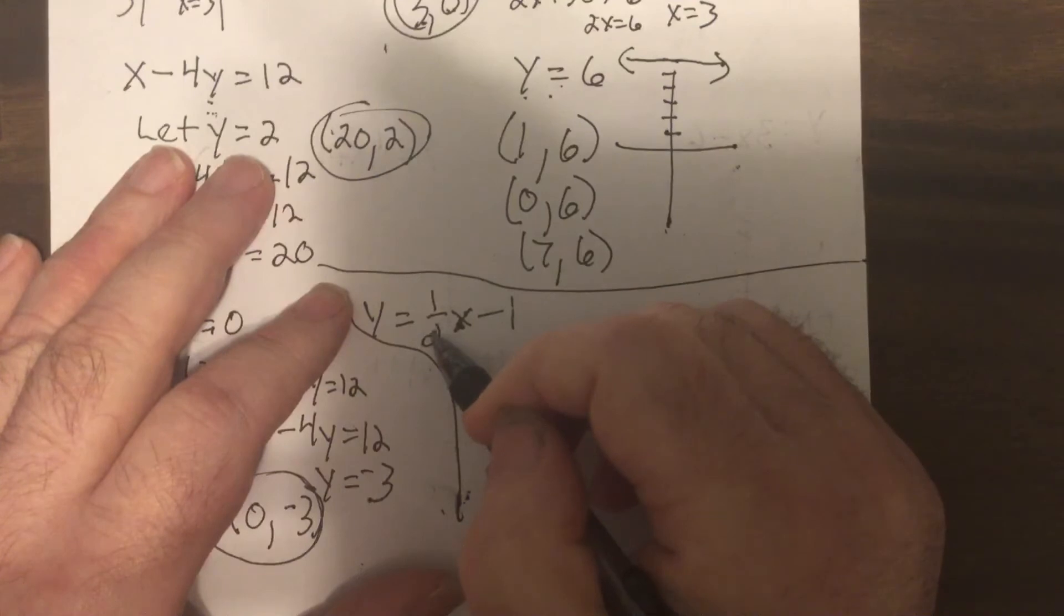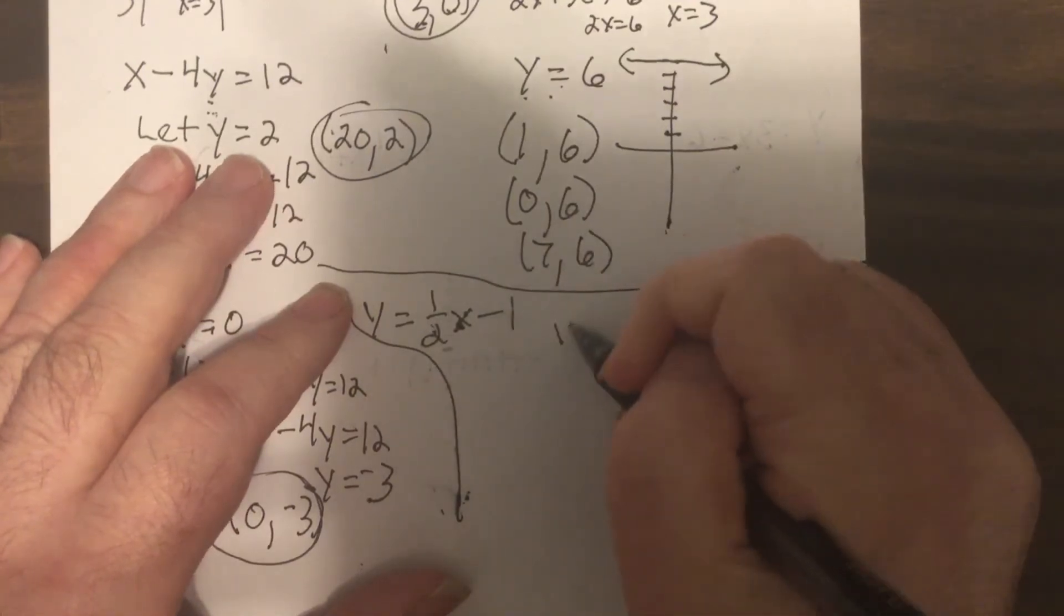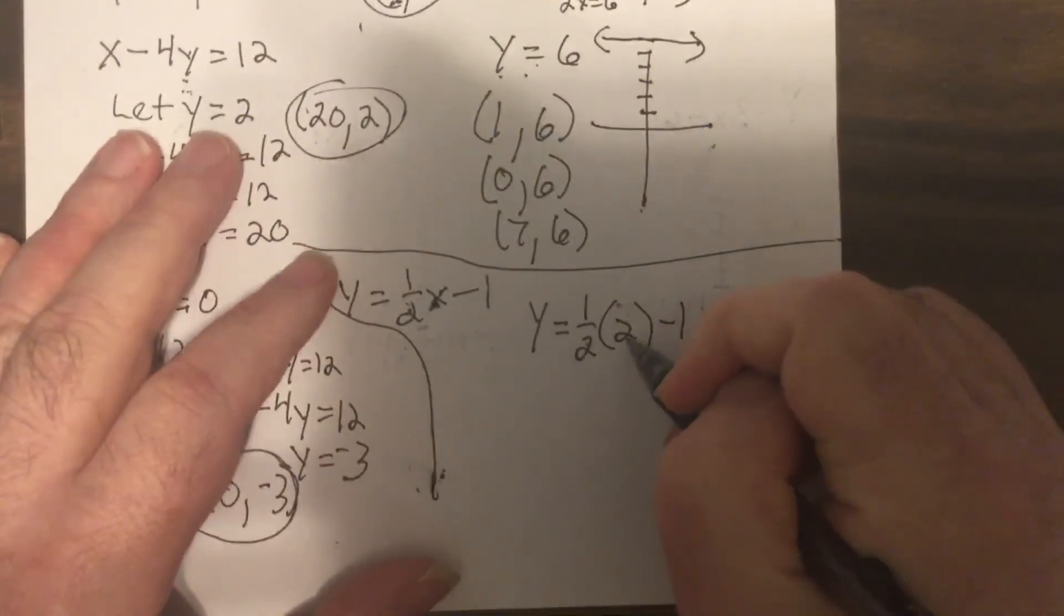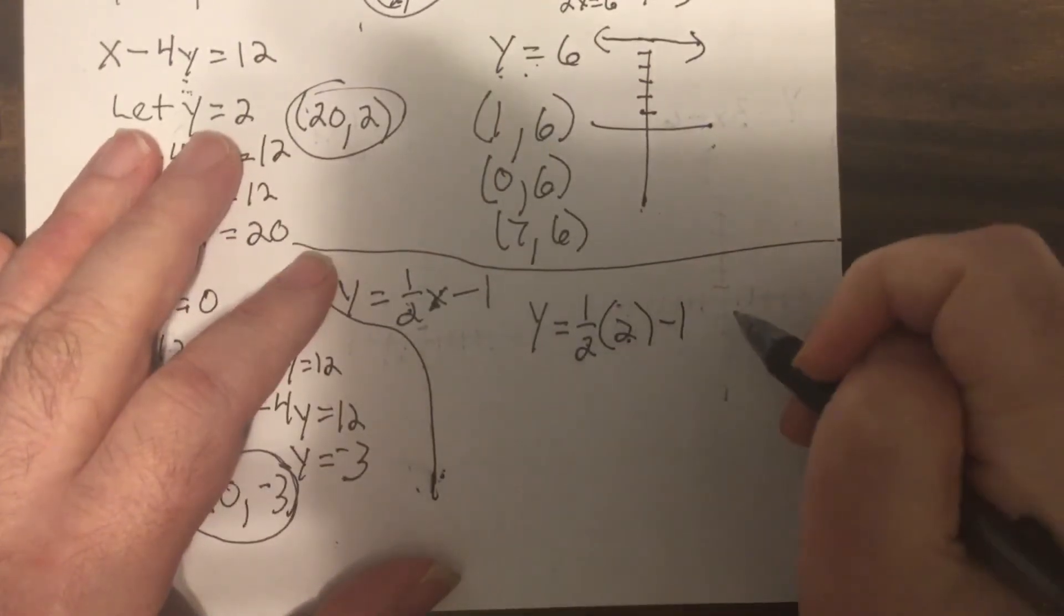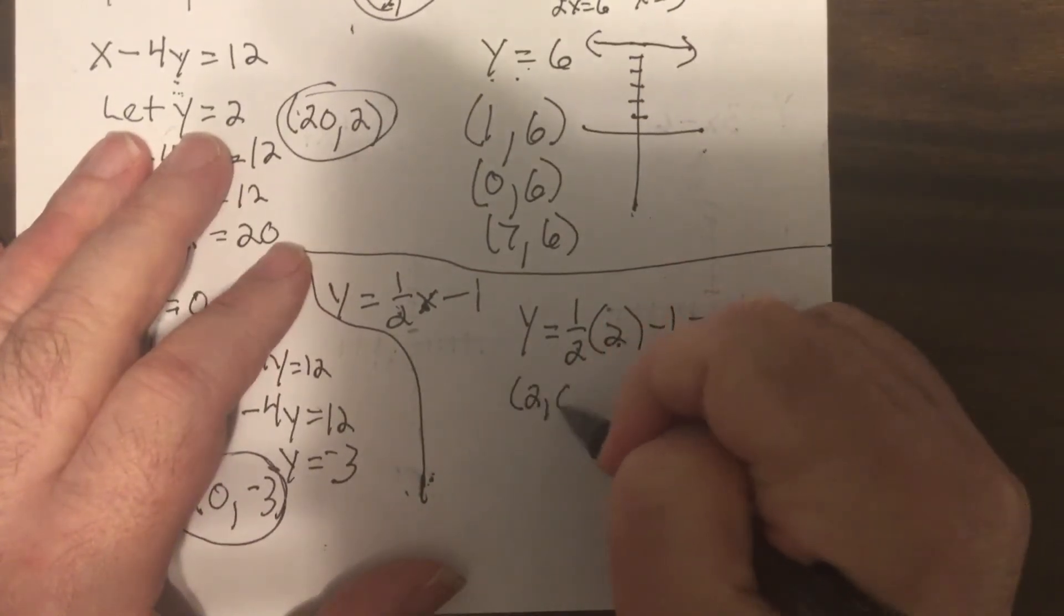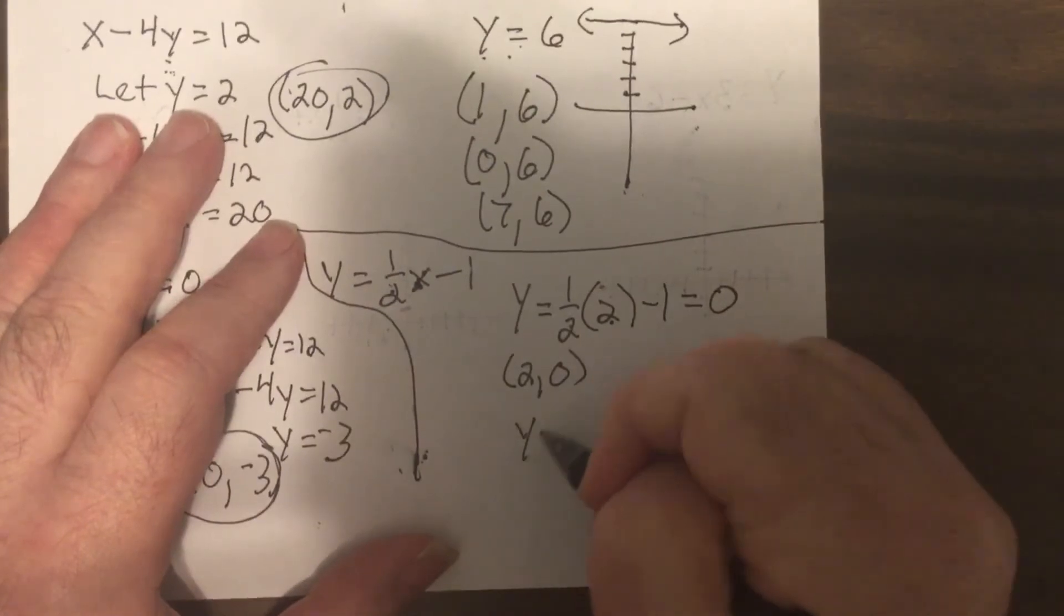Now this one, find three ordered pairs. Just put numbers in for X since it's solved for Y. Now I would do multiples of two because we got to multiply by a fraction. So let's let X equal two. So one half of two is one, one minus one is zero. So it would be the number two, zero.